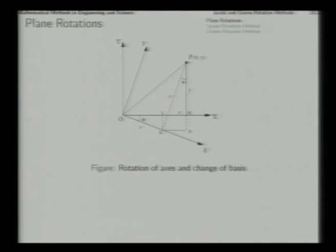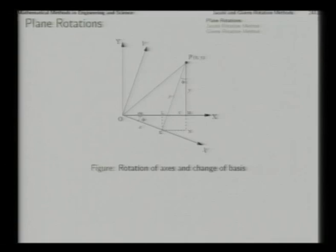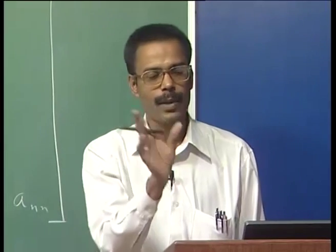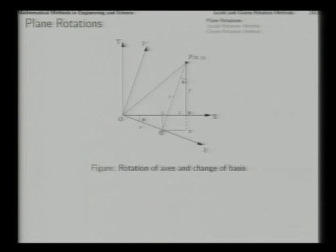First we study the plane rotation. In a simple 2D x-y plane, suppose we have a point P with coordinates (x, y) and we want to make a basis change — change the frame of reference through a pure rotation such that the x and y axes undergo a rotation of phi. The new x-axis is along x-prime and the new y-axis is along y-prime. In the new x-prime, y-prime axes, the new coordinates are x-prime and y-prime.